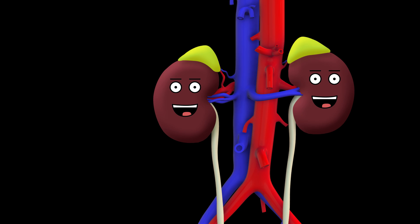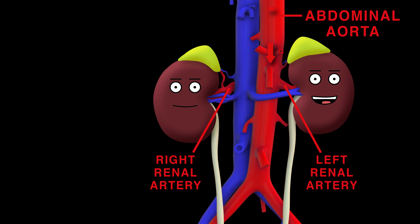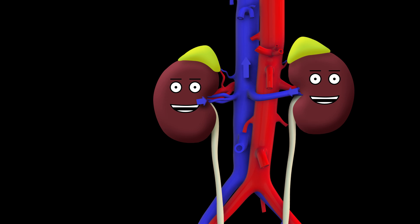From the abdominal aorta branch the renal arteries, sending us blood from the heart in large quantities. The blood leaves the kidneys through renal veins these two.